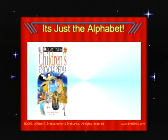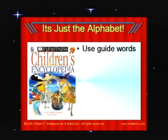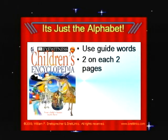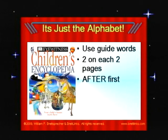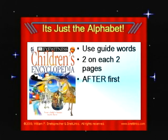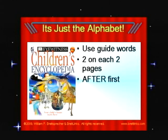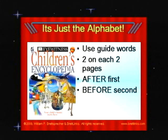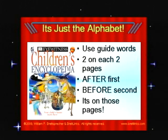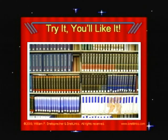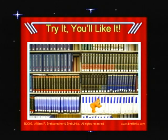It's just using the alphabet. Finding information in an encyclopedia is easy if we use guide words. Remember, two guide words on each two pages. We need to find the guide words where the item we look up would be after the first guide word in alphabetical order, and the word we are trying to look up needs to be before the second guide word. It has to be on one of those two pages. So try looking things up in an encyclopedia — it's easy. Just use the guide words, and it can be a lot of fun too.